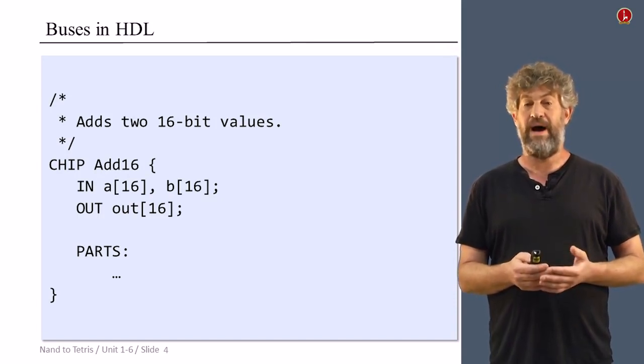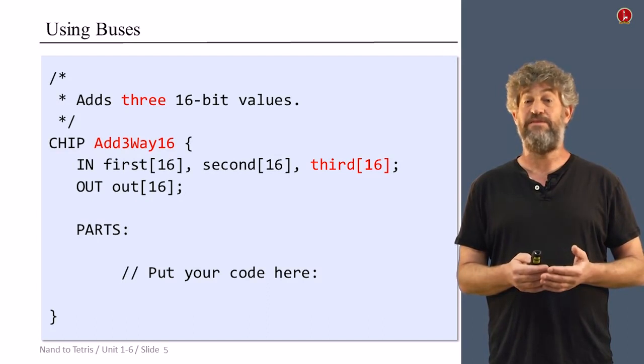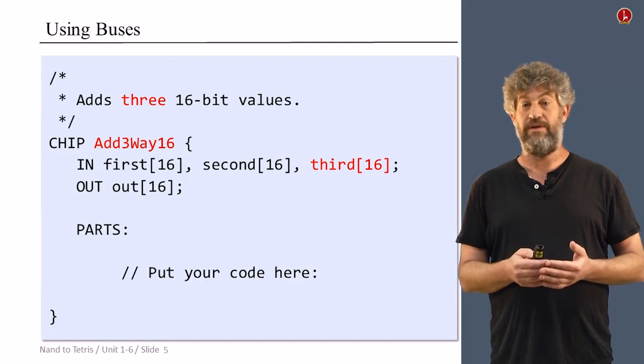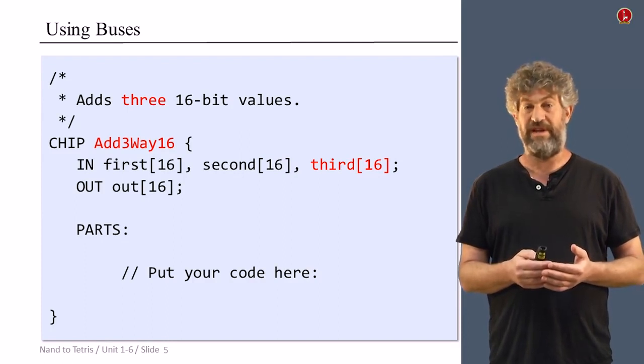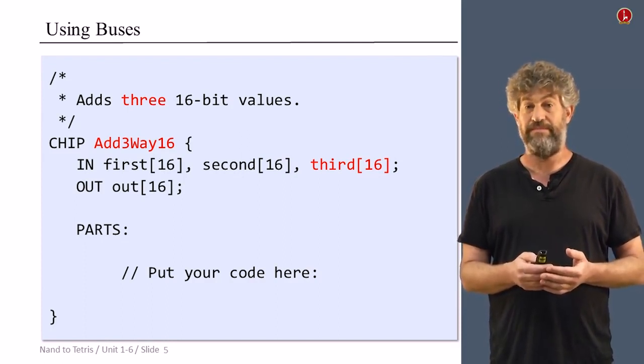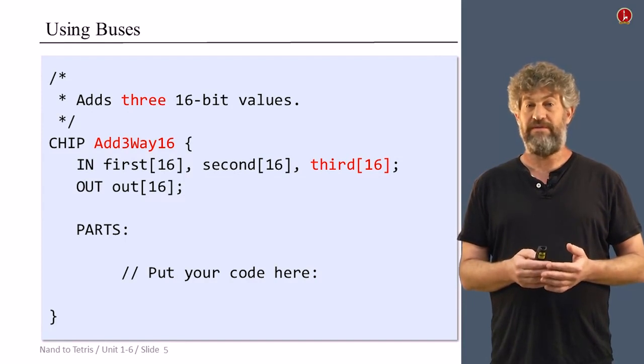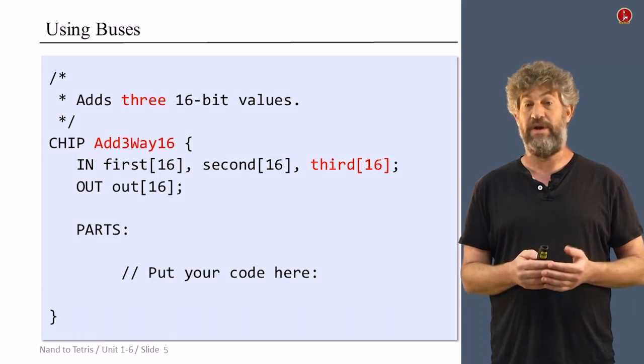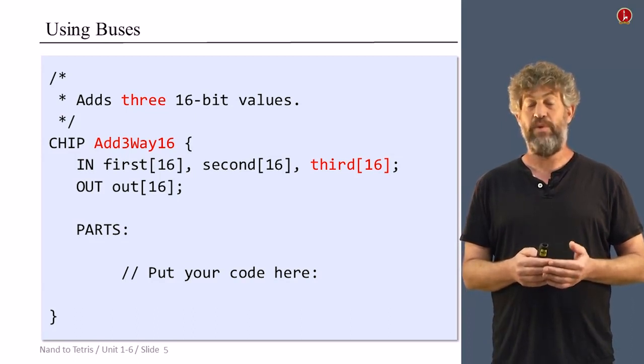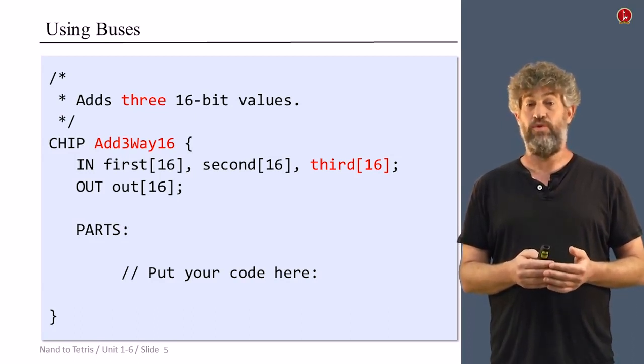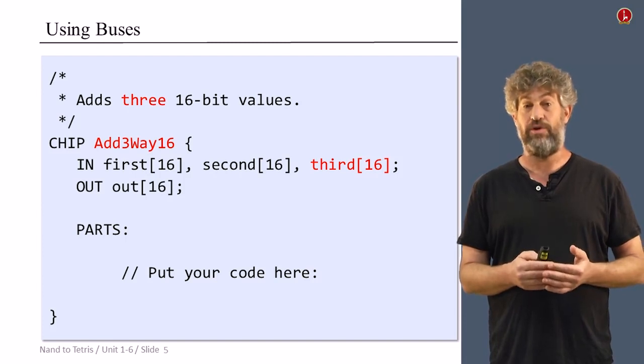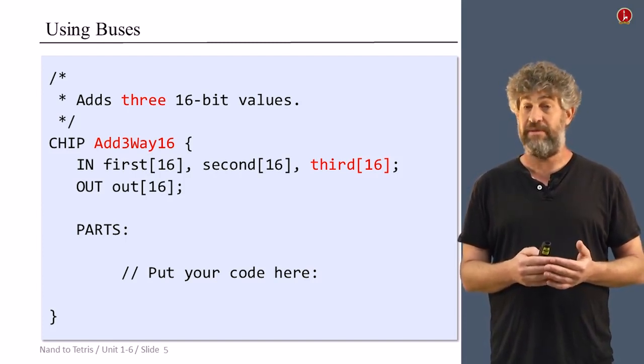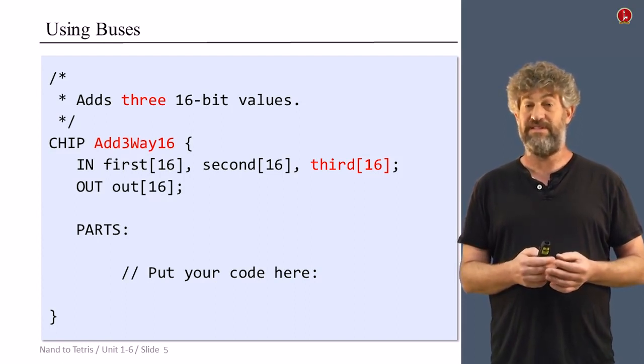Suppose we need to build a chip that now adds three numbers, each one of them 16 bits. Logically, we of course know how we can do that. We can just add two of them, and then add the third one to the sum. So how do we do that? We get an interface of three inputs. First, second, and third, each one of them 16 bits. And we need to have an output, which is just out, also 16 bits. And we want to manipulate it at this level of abstraction, not looking at all the separate bits themselves.